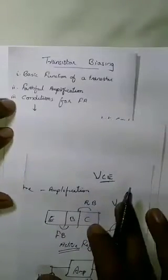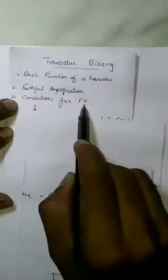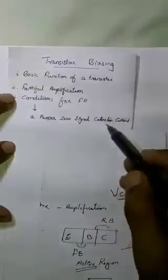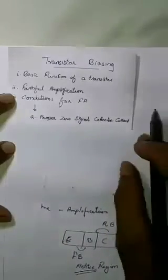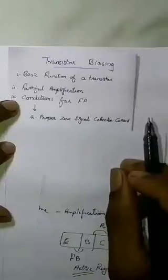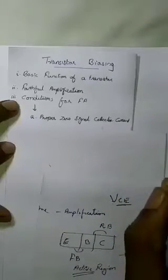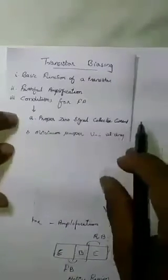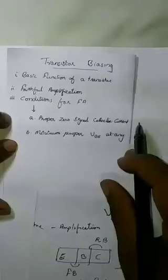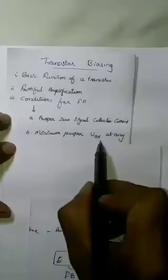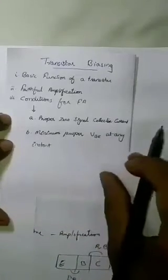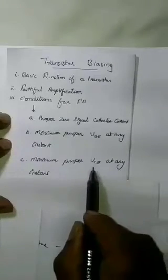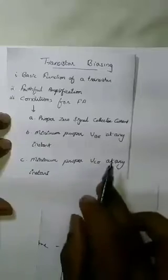There are three conditions for faithful amplification. The first condition is proper zero signal collector current. When input signals are zero, there must be a minimum collector current. The second condition is minimum proper VBE — the base-emitter voltage — at any instant. The third condition is minimum proper VCE — the collector-emitter voltage — at any instant.